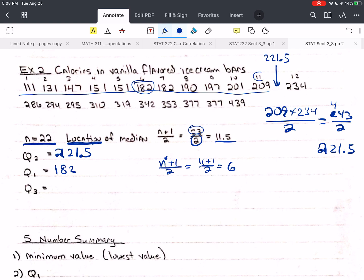So 182 is my first quartile. Now, I count the values above that. That's going to include 12. I'm going to renumber that as 1, 2, 3, 4, 5, 6, 7, 8, 9, 10, 11.